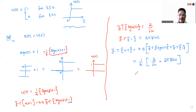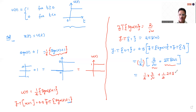So the Fourier transform of the signum function is 2 divided by j·omega, and the Fourier transform of 1 is 2π·delta(omega). Distributing the factor of one-half: one-half times 2 over j·omega gives 1 over j·omega, and one-half times 2π·delta(omega) gives π·delta(omega). The 2s cancel, leaving us with the Fourier transform of the unit step function equal to 1 over j·omega plus π·delta(omega).